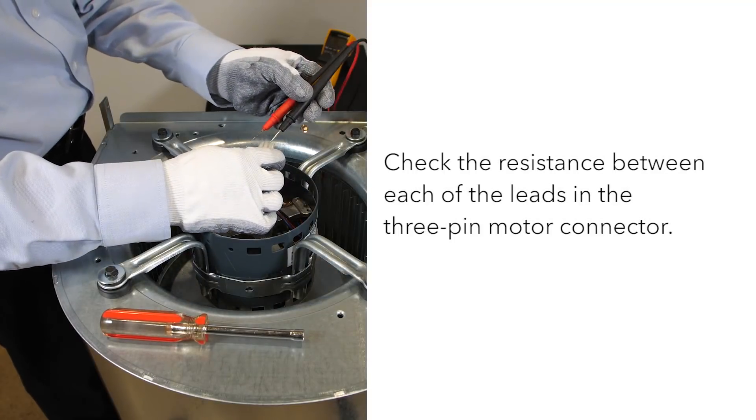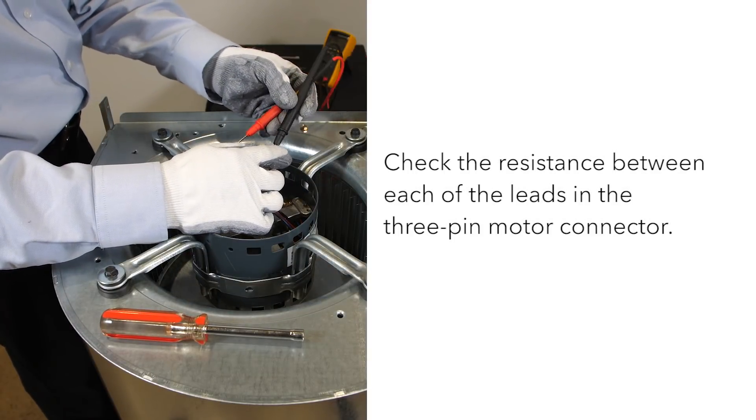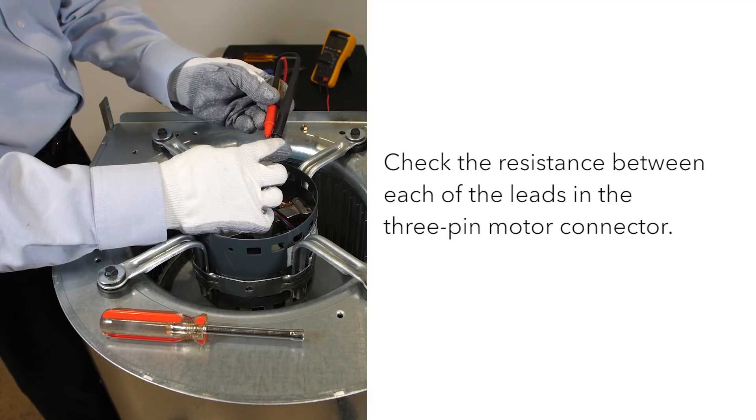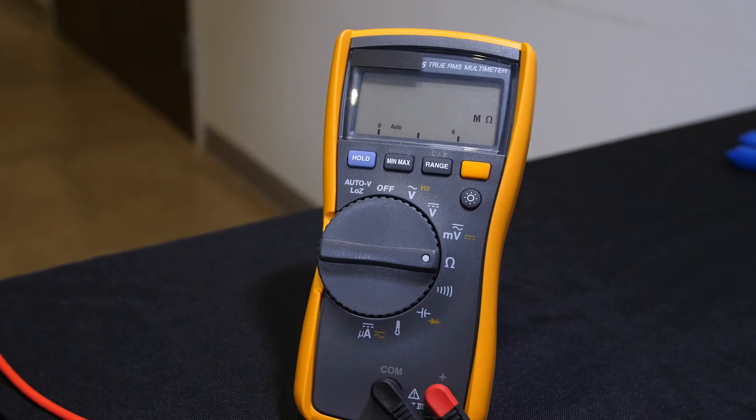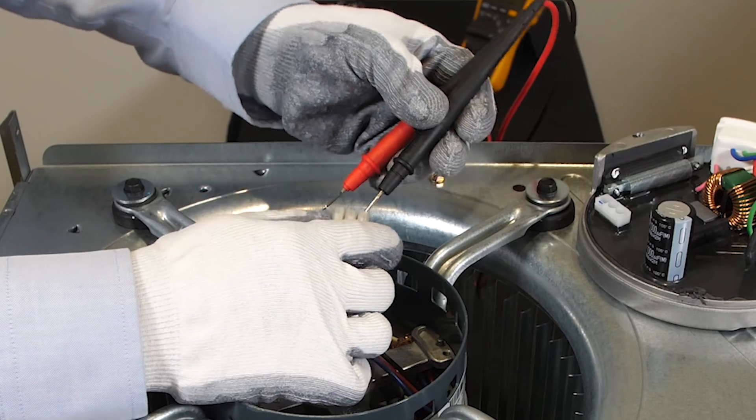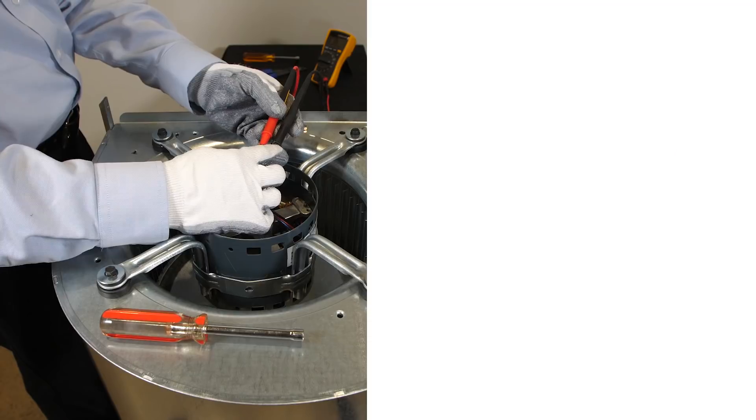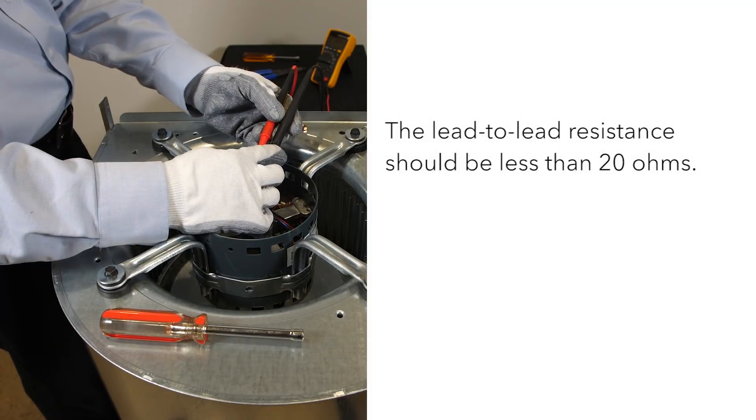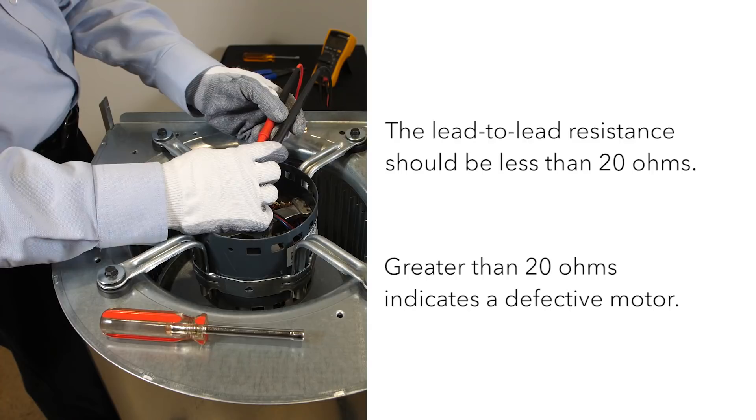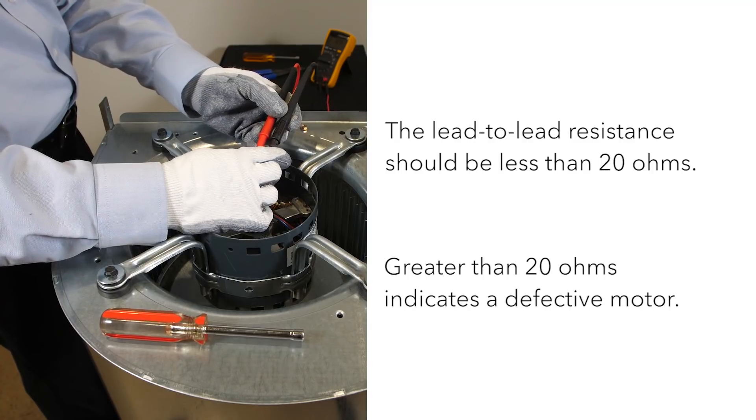Check the resistance between phase to phase by checking between each of the leads in the three pin motor connector. The lead-to-lead resistance across any two leads should be less than 20 ohms and each lead-to-lead resistance should be the same within plus or minus 10%. If this test fails and you have greater than 20 ohms, it means you have a defective motor and it needs to be replaced.